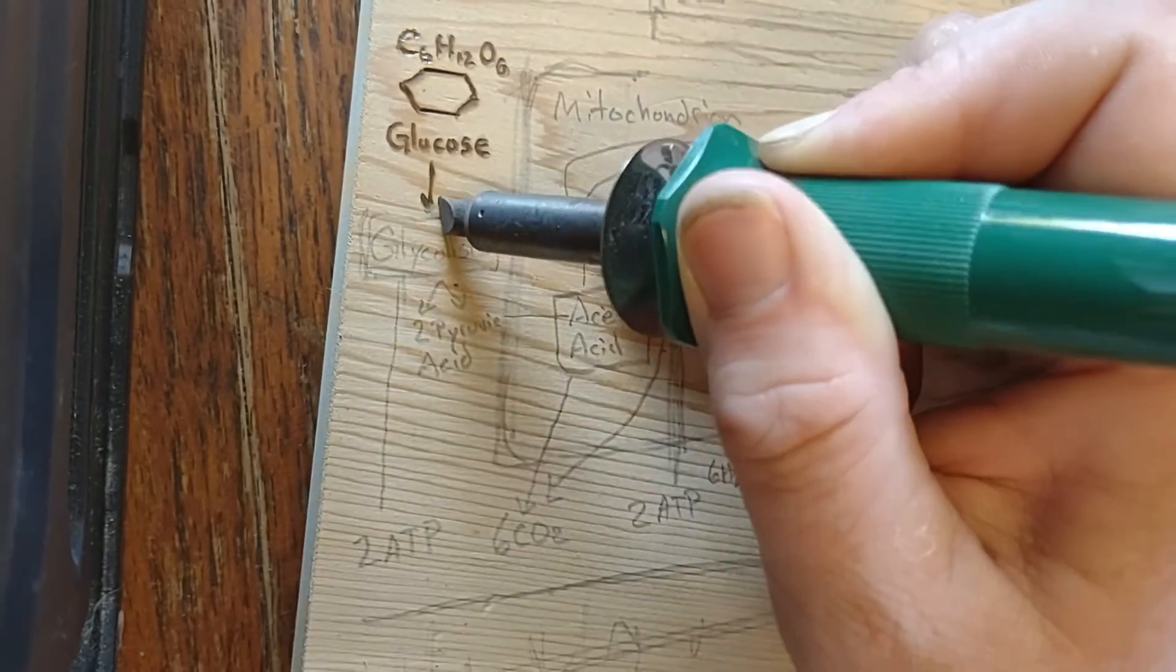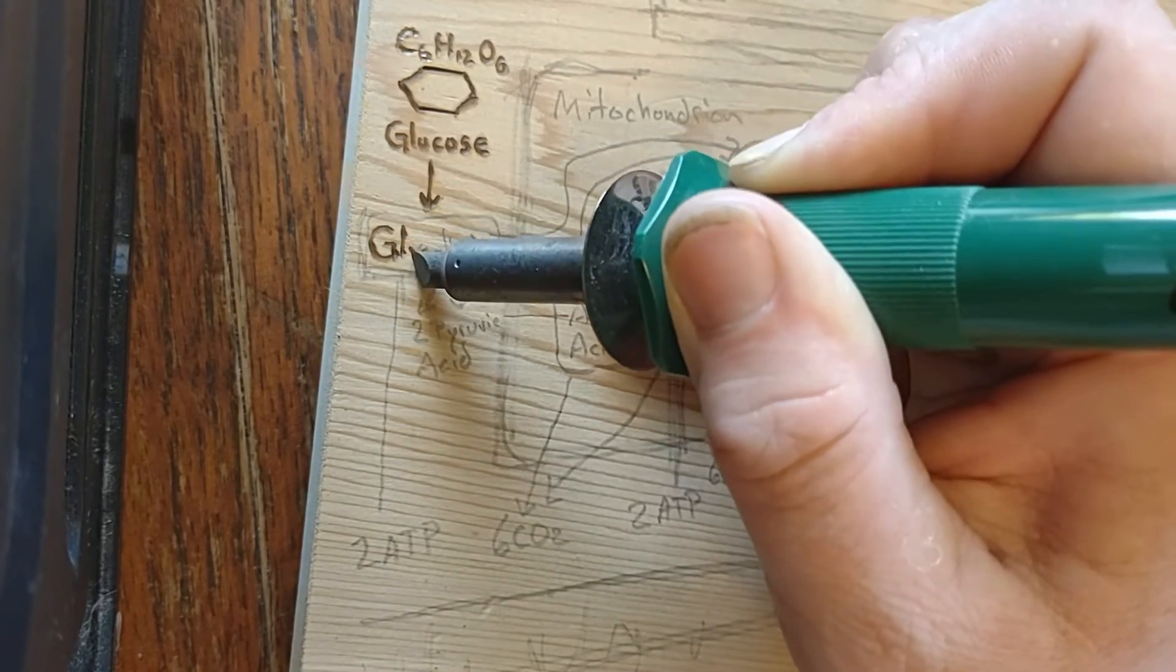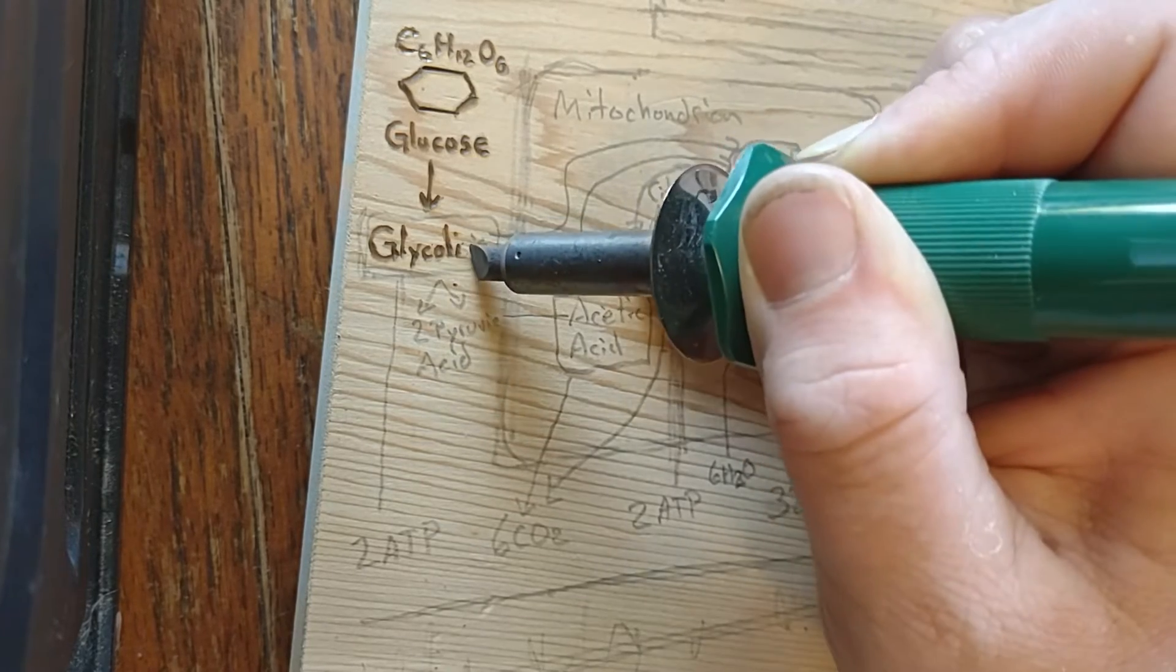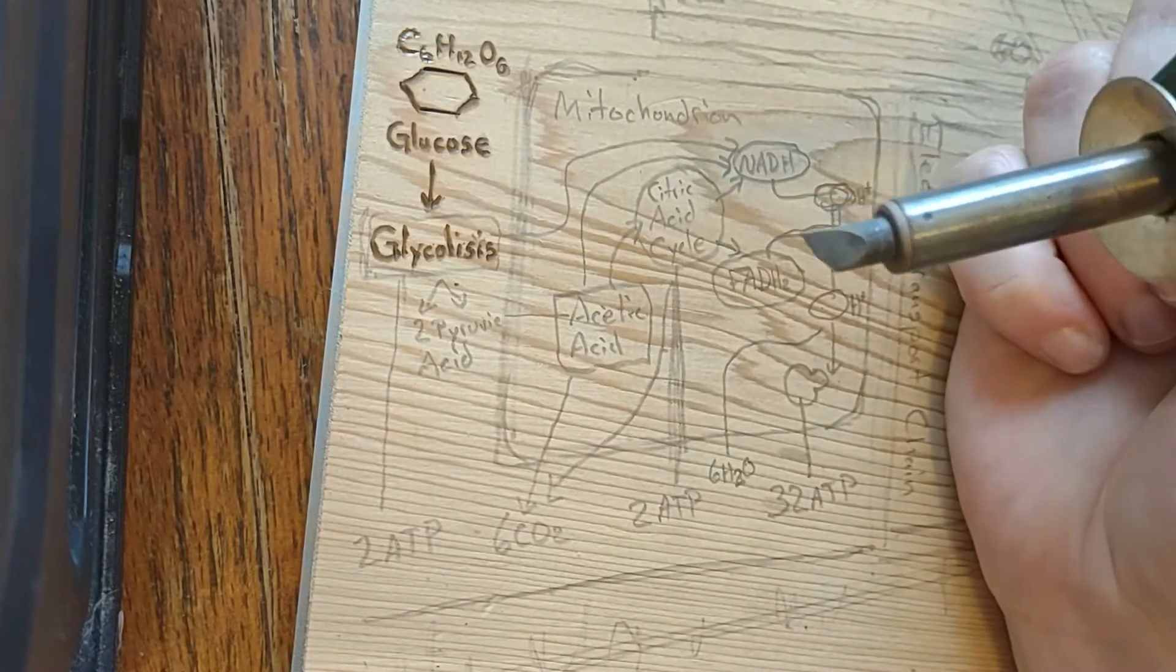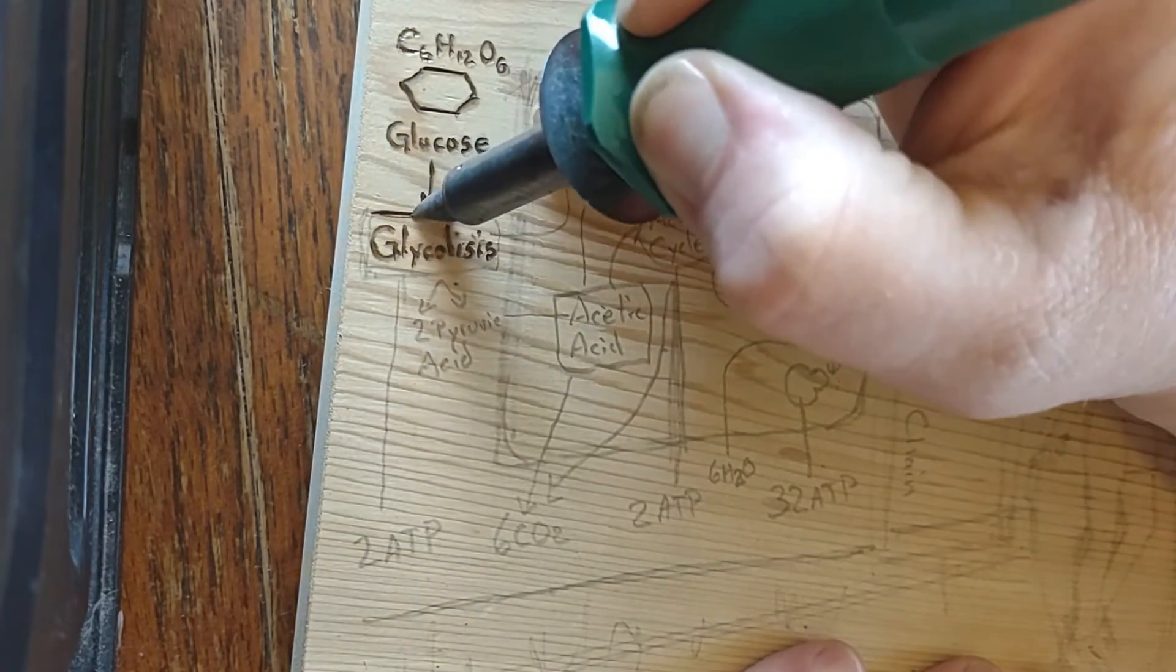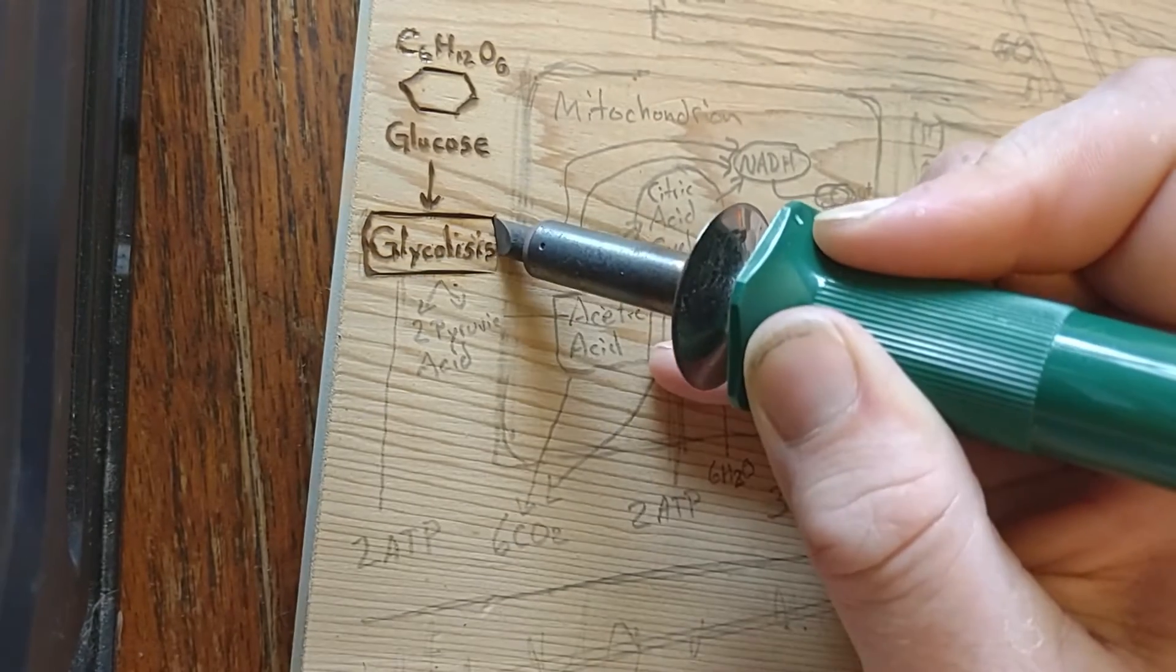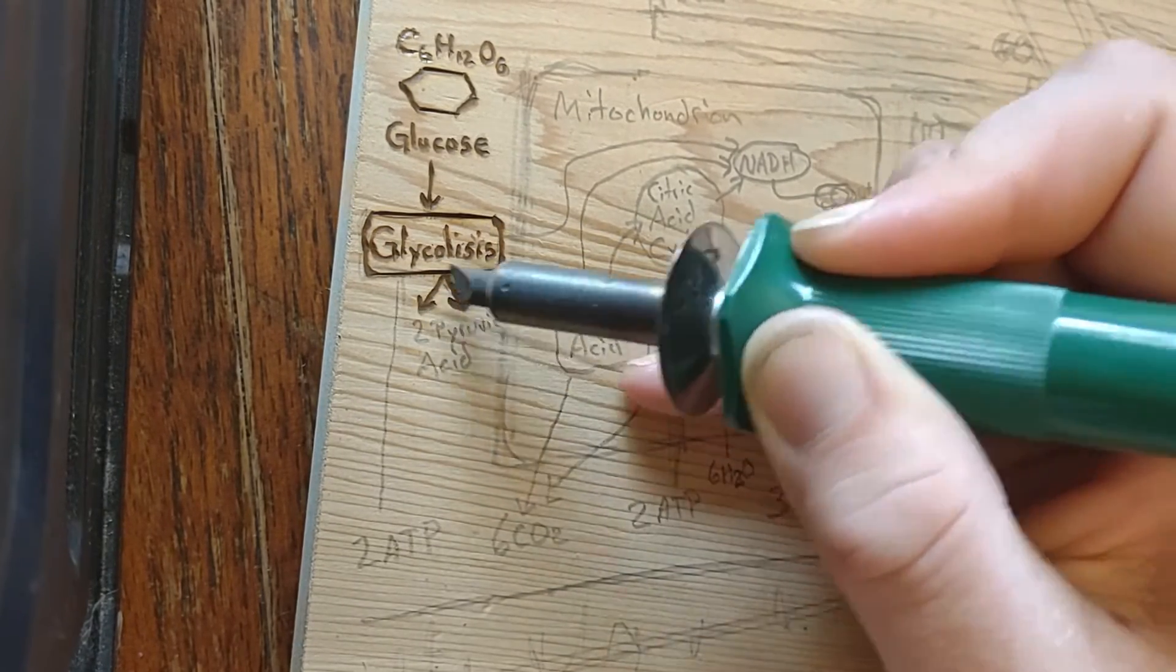The molecule is cleaved by the enzyme aldolase. During the payoff phase of glycolysis, four phosphate groups are transferred to ADP by substrate level phosphorylation to make four ATP, and two NADH are produced when the pyruvate is oxidized.